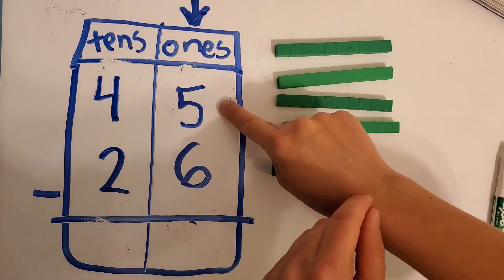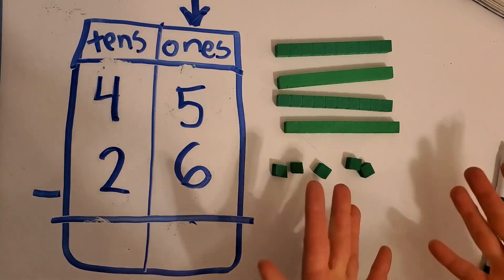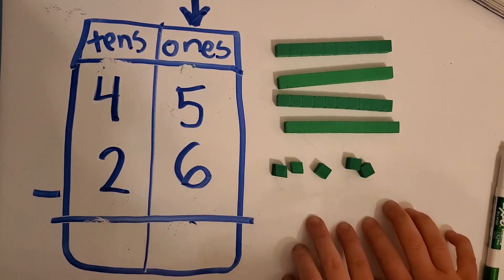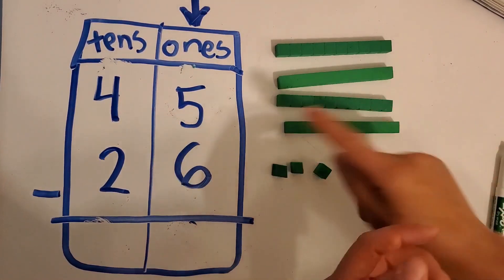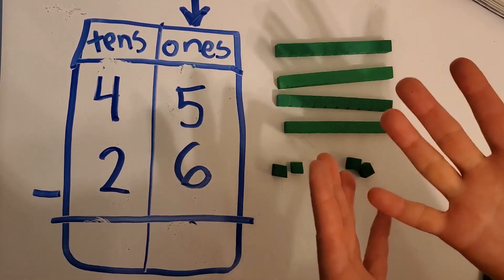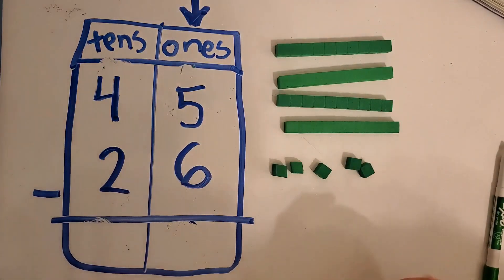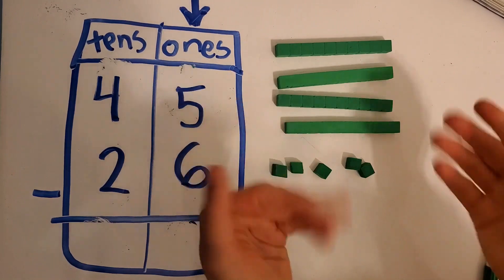So for the ones, five minus six, can we take away six ones? No, because we only have five. So what do we have to do when this number is smaller than this number? We have to regroup. We have to regroup a tens as ones.